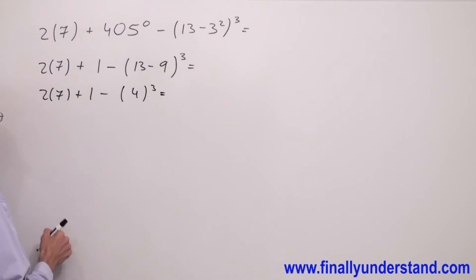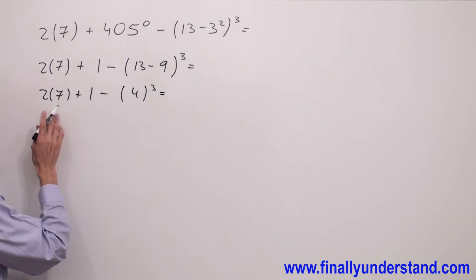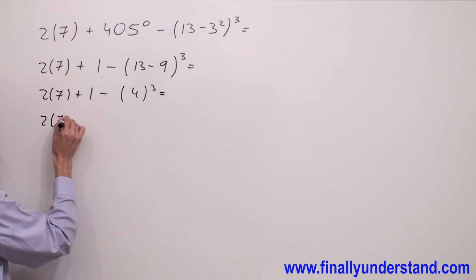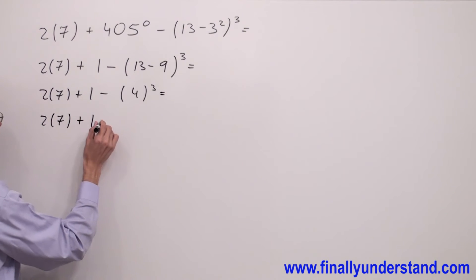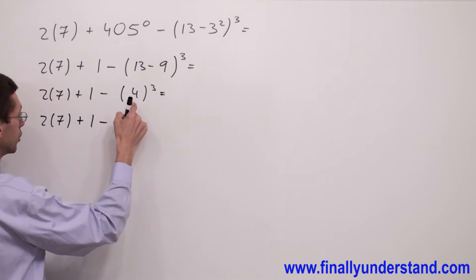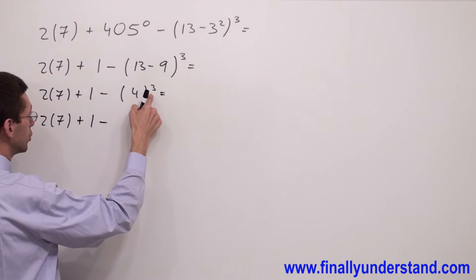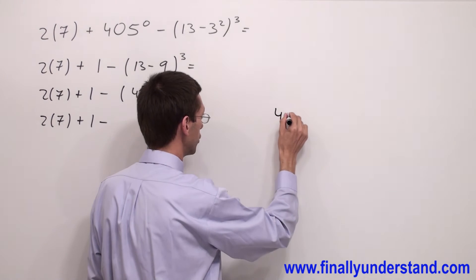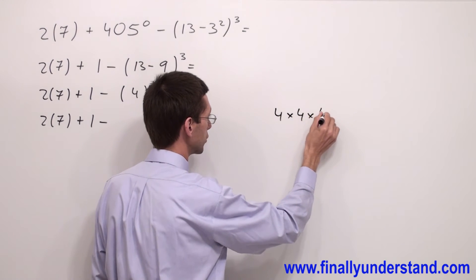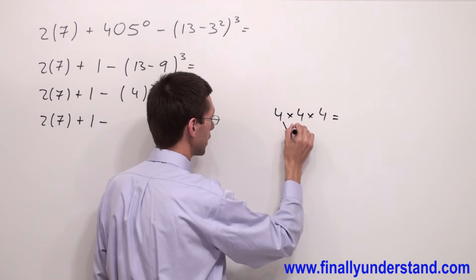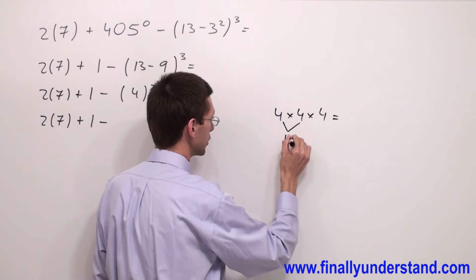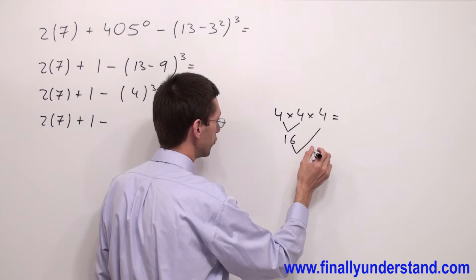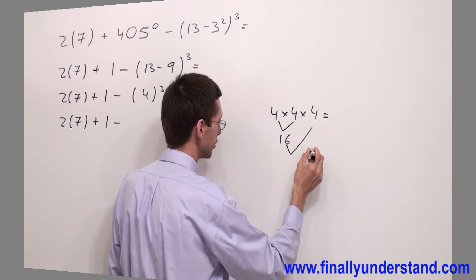I have another power to deal with. I'm going to do everything step by step as I said before: 2 times 7 plus 1 minus 4 to the third power. 4 to the third power is 4 times 4 times 4. 4 times 4 is equal to 16, and 16 times 4 is equal to 64.